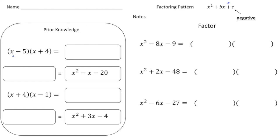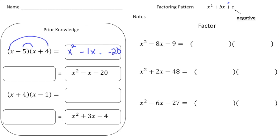All right, so the first problem we have x minus 5 times x plus 4. So let's just use FOIL to multiply these together. So x times x will be x squared. And I know the last term, negative 5 times 4, is going to be a negative 20. And then to get the inside terms, we have to do the product of the inside plus the product of the outside. So negative 5x plus positive 4x will give us a minus 1x. So x squared minus 1x minus 20 is what we're looking for.